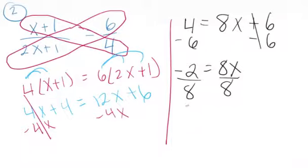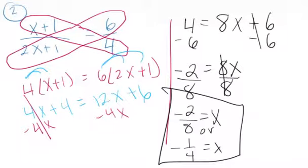We get negative 2 equals 8x, divide by 8. I've seen a lot of students at this point write negative 4 is their answer. We can't do that because 8 is dividing into negative 2. So our answer should be negative 2 over 8, or we could reduce that and become negative 1 fourth. This would be the better answer on the bottom.